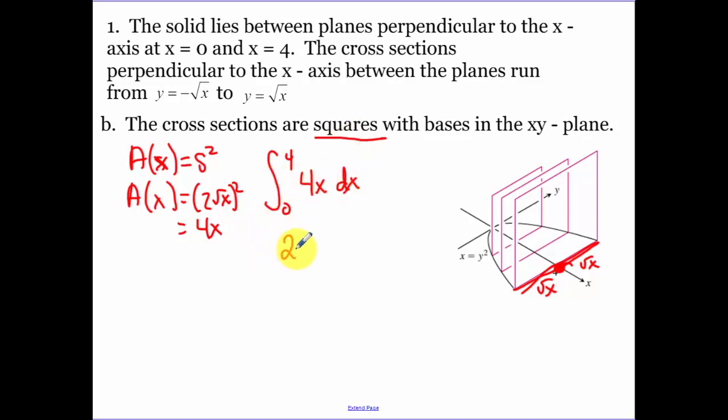When I take my integral, I get 2x squared from zero to four, and we get 32.